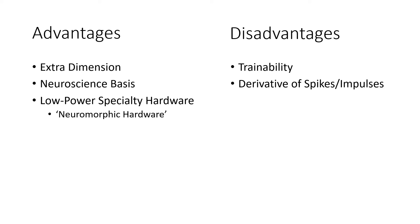Some advantages of spiking neural networks: there's the extra dimension because you have rate and timing, which is really nice. They have a basis in neuroscience because brains of actual animals use spikes. They don't use analog systems.